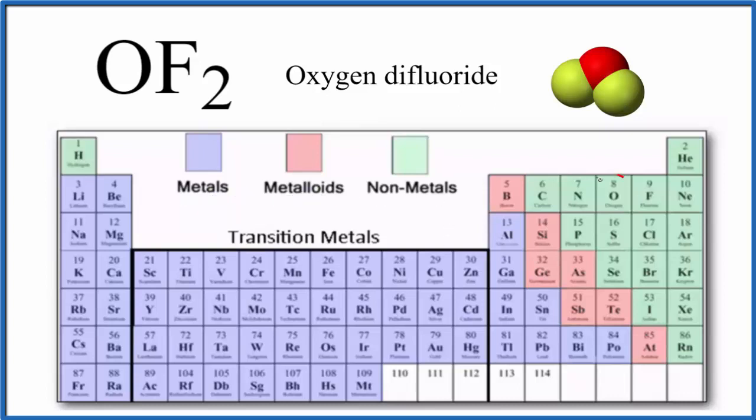So we're going to first find oxygen that's right here, and then right next to it is fluorine. So we have two nonmetals. Because we have two nonmetals, we have a covalent compound, also called a molecular compound.